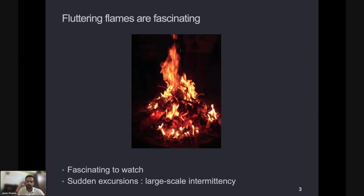A fluttering flame is quite fascinating to watch — something you can stare at for quite a while, and I'm sure it fascinated our early ancestors who discovered fire. What makes it so interesting is that such a flame undergoes these big excursions, this bursting kind of behavior. Underlying that is a sort of intermittency — a large-scale intermittency involving large-scale motions of the flame, which can have this on-off type bursting dynamics.